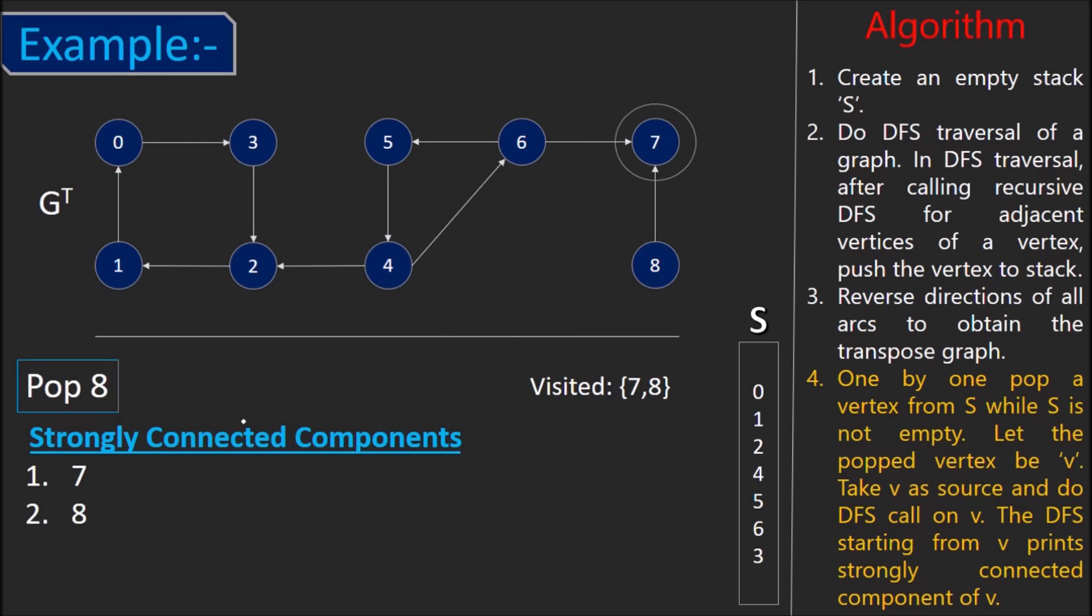Next step, pop 8. Again, we cannot visit any unvisited vertex from 8 using DFS. So, 8 is another strongly connected component.